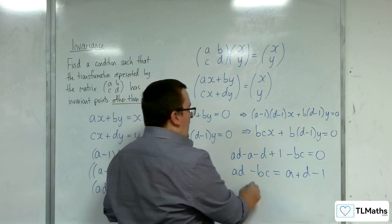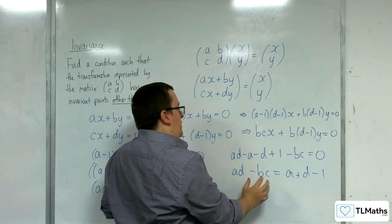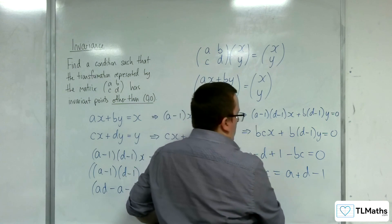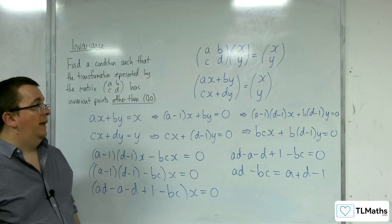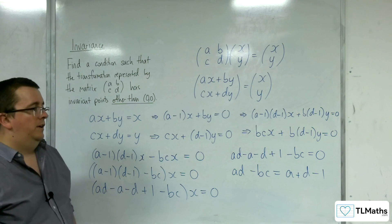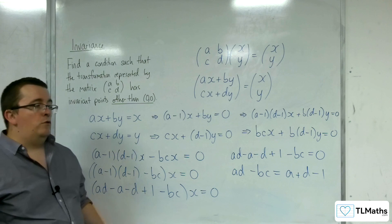We'll get to that later in the playlist. So the determinant of the matrix, if that is equal to a + d - 1, then you will have an invariant point other than (0,0).